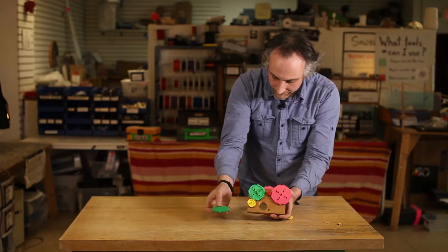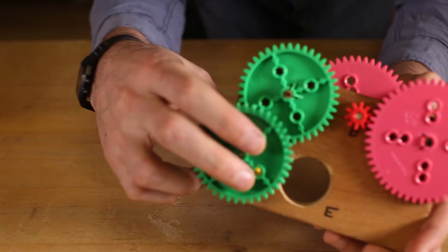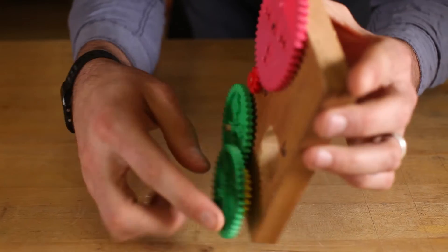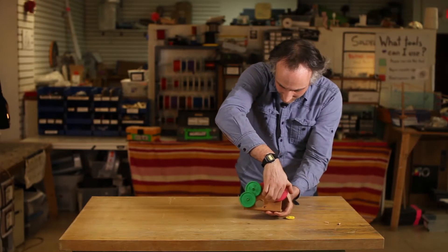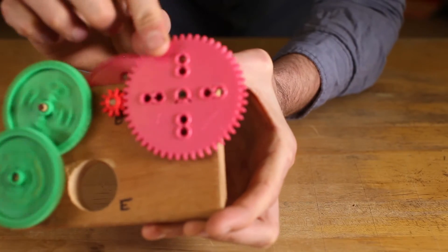Now we're going to take this green gear and put it on top of the yellow gear, because this gear is going to interface with the motor. So I can spin that, and you can see that everything spins.